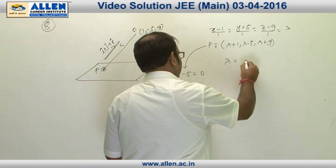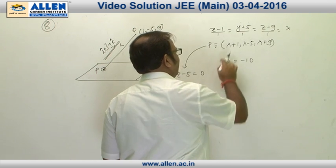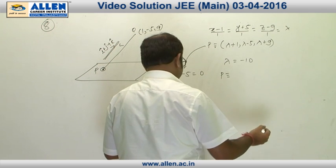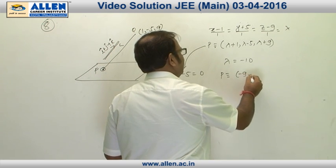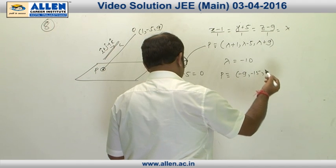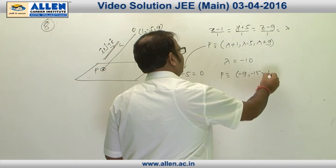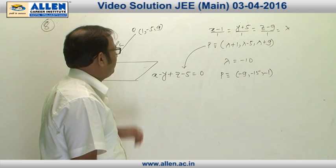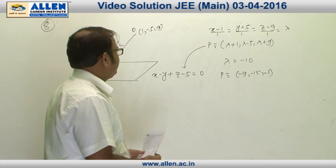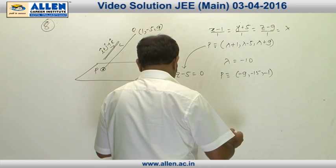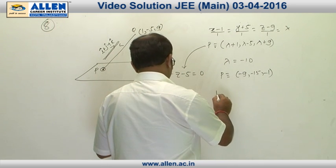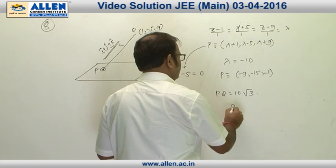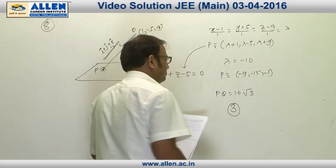Substituting into the plane, λ comes out to be -10. Putting λ = -10, the coordinates of point P are (-9, -15, -1). Applying the distance formula, the length PQ = 10√3. Therefore option 3 is the correct answer.